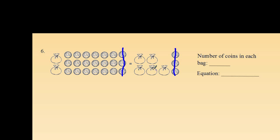Continuing with that idea, I see these 2 bags on the left side. I can subtract these 2, and on the right side I can take away any 2 bags as well. That now leaves me with just these 18 coins on the left side of the equal sign, and on the right side I have 3 bags with no visible coins.